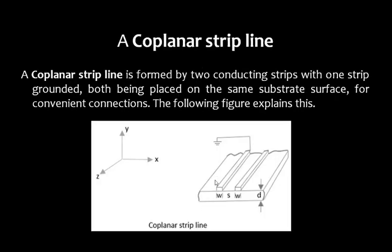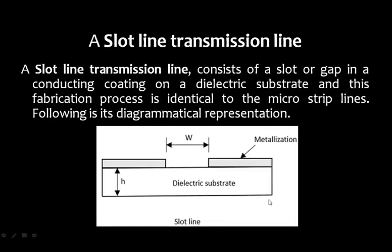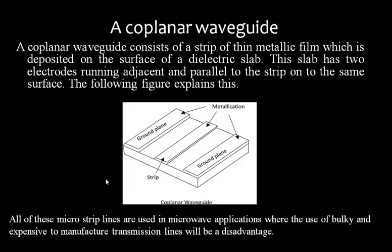The slot line transmission line consists of two conductors on a dielectric substrate with a slot of width W between them. Its fabrication process is identical to the microstrip line. The coplanar waveguide differs from the coplanar strip line: it consists of a thin metallic strip deposited on a dielectric slab, with two ground electrodes running adjacent and parallel to the strip on the same surface.